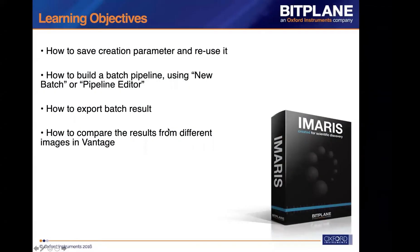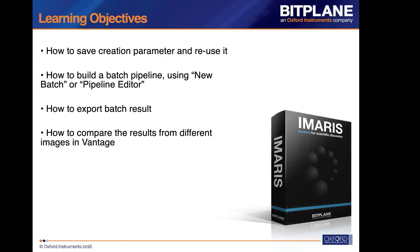Today our learning objectives are: how to set creation parameters and reuse them later on other images; how to build a batch pipeline including just one object, or including both image processing and segmentation using spots, surfaces, cells, or filaments; how to export the batch result as a complete spreadsheet; and how to compare results from different images using Vantage. Vantage is a plotting module in Imaris which we will cover in another session, but today we'll use it to compare batch image results.